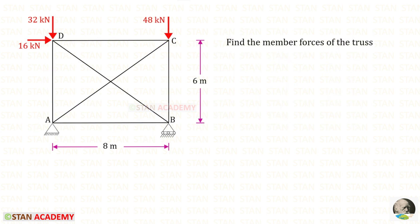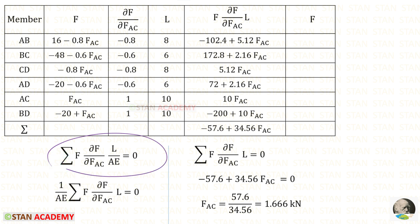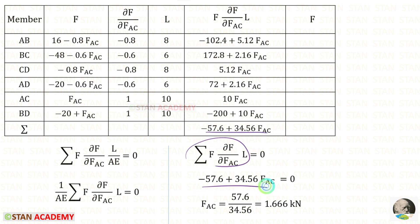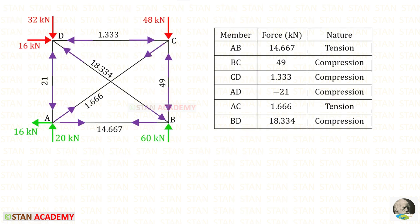Let us solve one final question: find the member forces in this truss where no cross-sectional area is mentioned. In this case we assume the area A is common for all members, so no area column is needed in the table. We multiply F × (∂F/∂FAC) × L for each member and add all terms. Taking 1/(AE) outside and cancelling it to zero on the other side, we apply the summed expression and solve for FAC, then substitute to get all member forces entered in the truss.